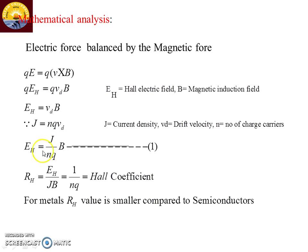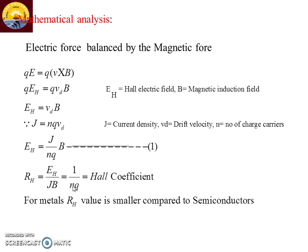Rearranging the equation: EH/(JB) = 1/(NQ), where RH = EH/(JB) is defined as the Hall coefficient. The Hall coefficient value is smaller for metals because the number of charge carriers in metals is large, making RH small. Whereas in the case of semiconductors, the carrier concentration N is smaller, so the RH value will be larger.